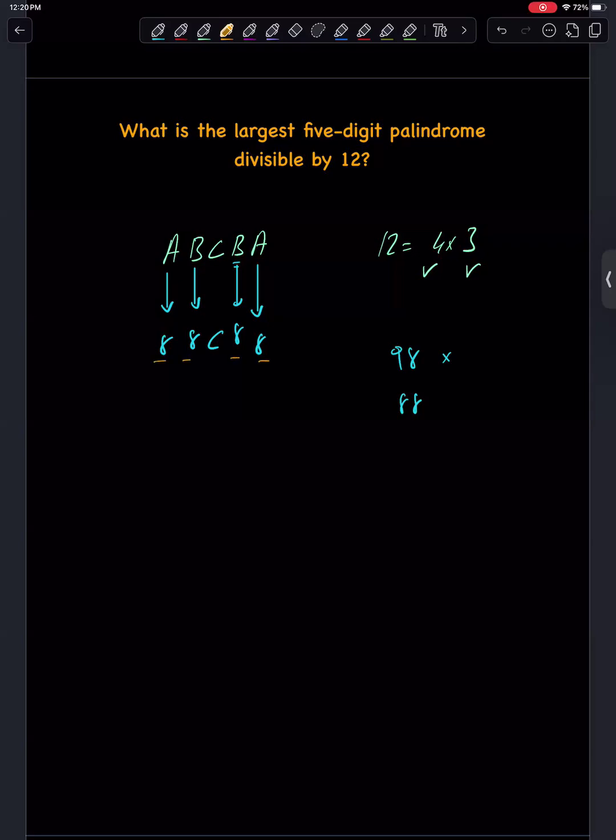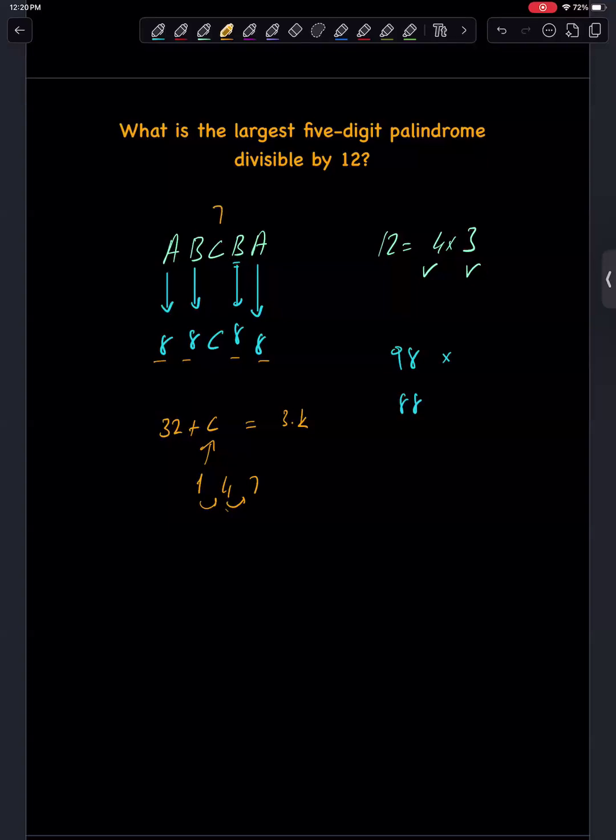We have four 8s. 8 times 4 is 32. 32 plus C must be a multiple of 3. The largest digit for that is 32 plus 1, which is 33, but if we can add 3, which is 4, add 3 equals 7. If we choose C is 7...